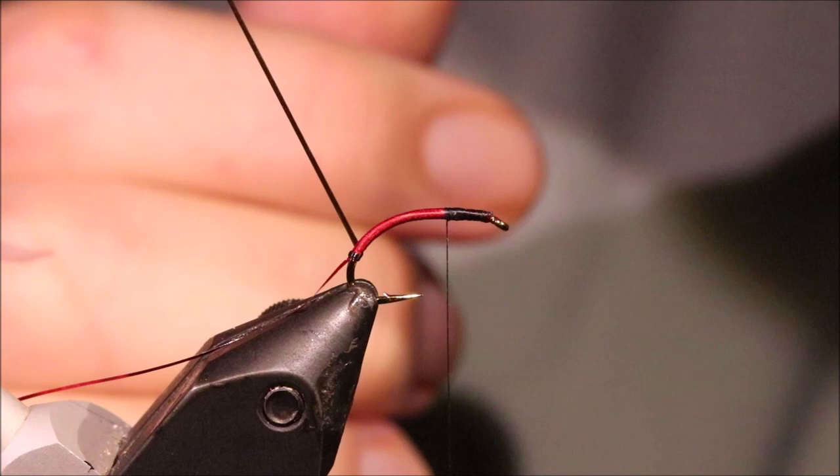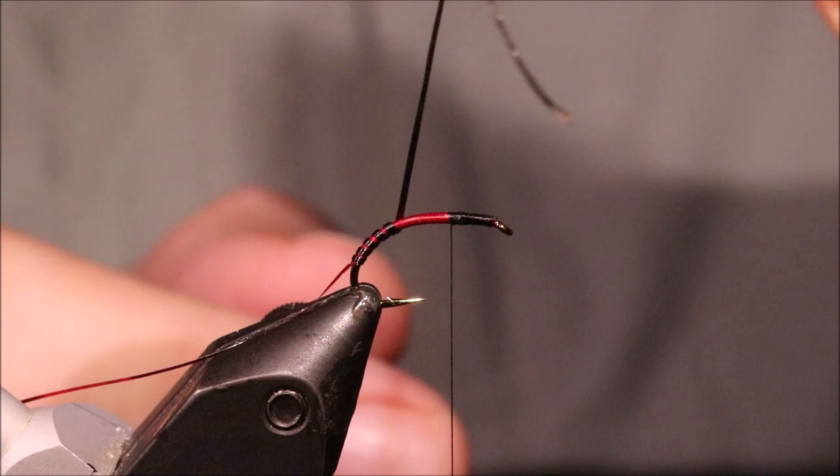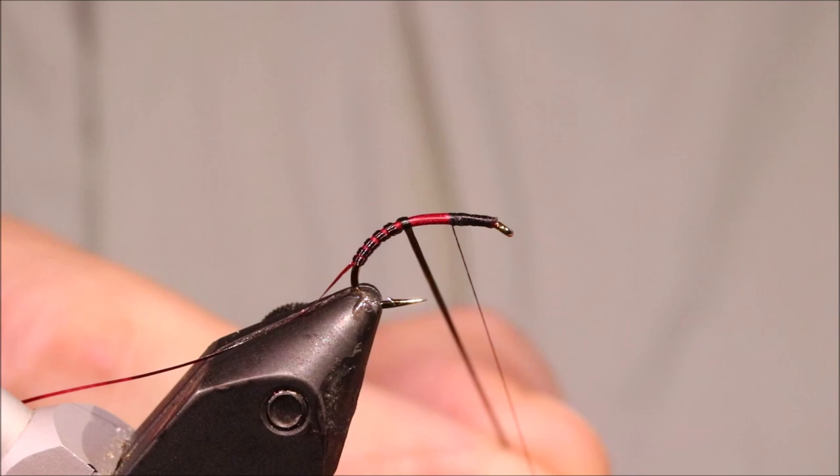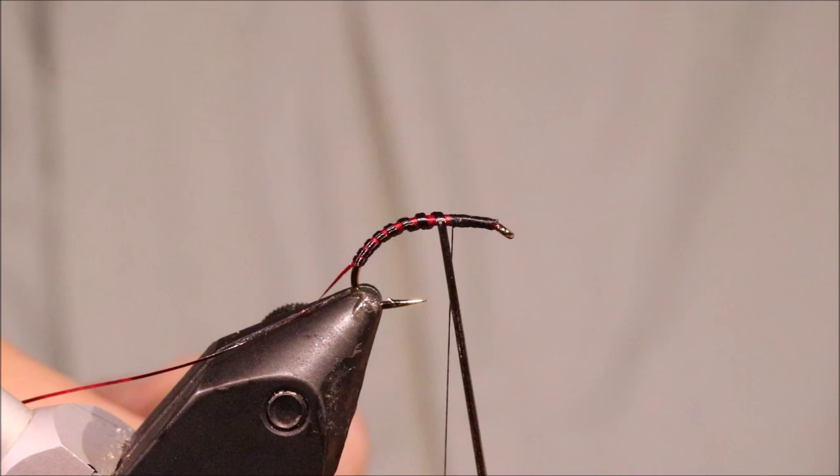I'm going to again get that flex floss nice and tight. Take a full wrap and then come up, probably about seven wraps up the body. And as you get towards the front you can gradually start to open them up and slightly let the tension off the flex floss. And that'll help put your taper in.